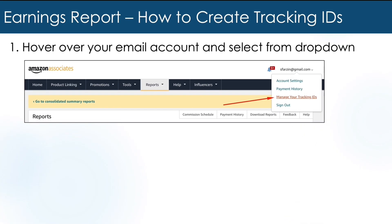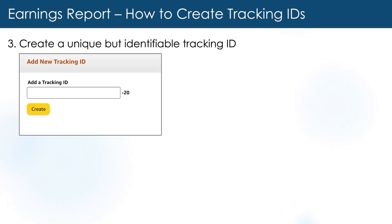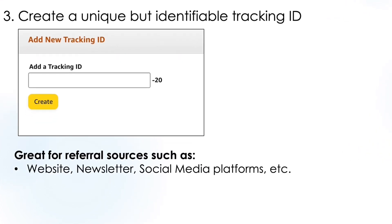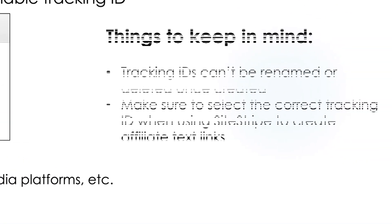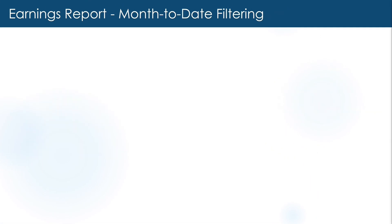To create a tracking ID, make sure you're logged into Associate Central and then hover over your email account in the top right and select Manage Tracking IDs from the dropdown. Once you're on the screen, you have the option to add a new tracking ID or see a collection of your already created tracking IDs. To create one, tap the yellow button and then enter a unique but identifiable ID that you'll associate to a referral source like your website, newsletter, Instagram, or another source. A couple of things to keep in mind: tracking IDs can't be renamed or deleted once created, and make sure to select the correct tracking ID when using SiteStripe to create your affiliate text links.